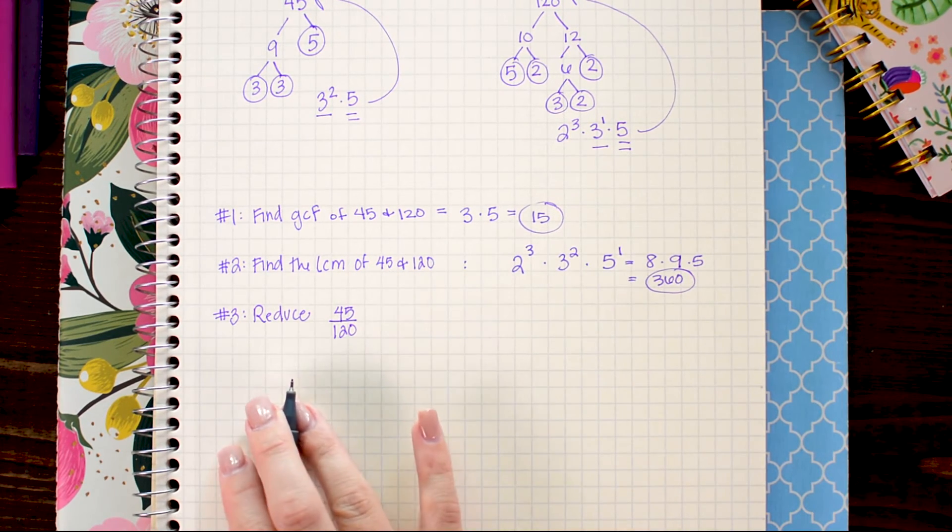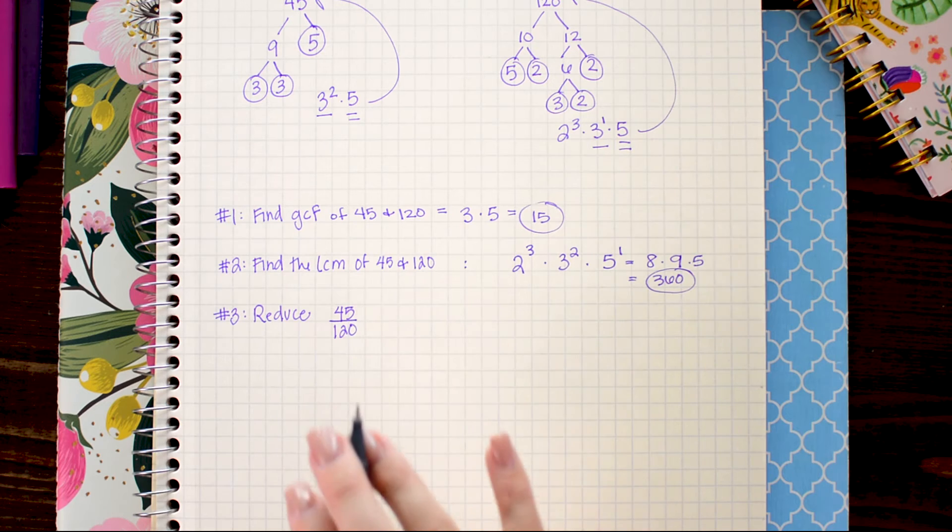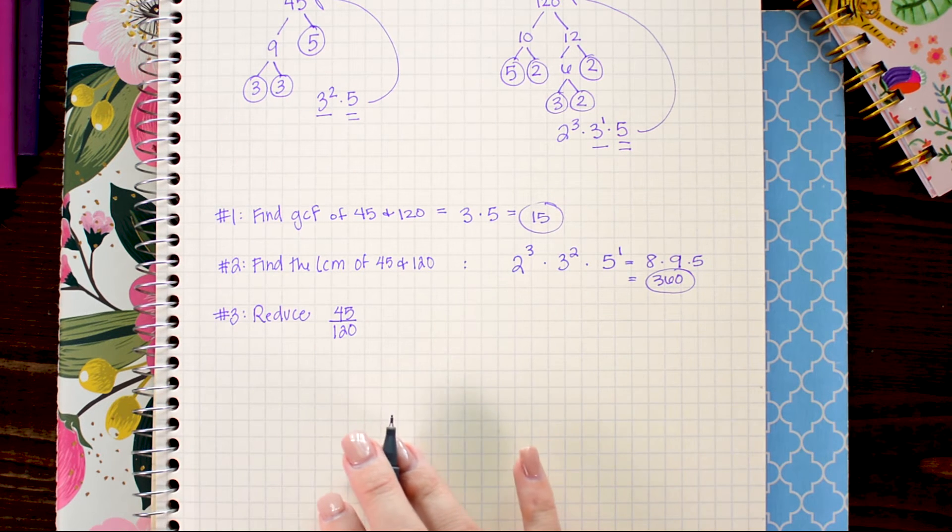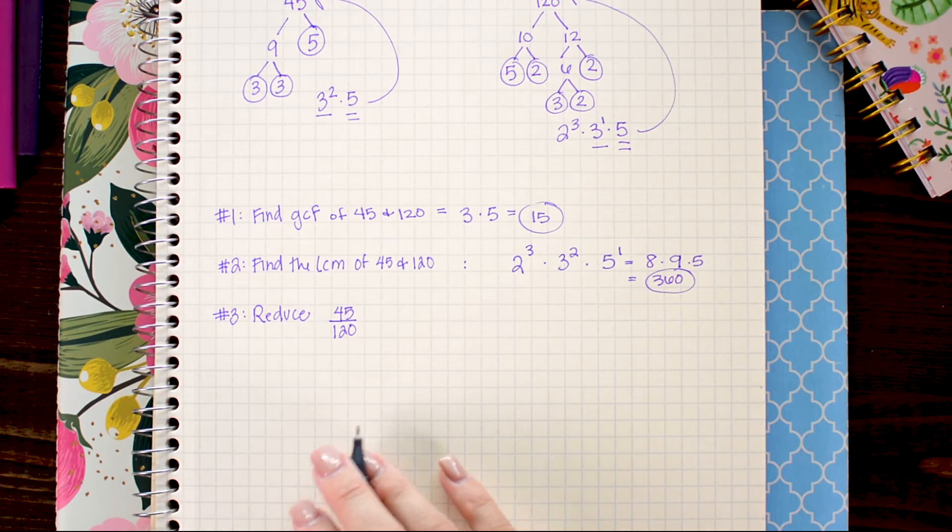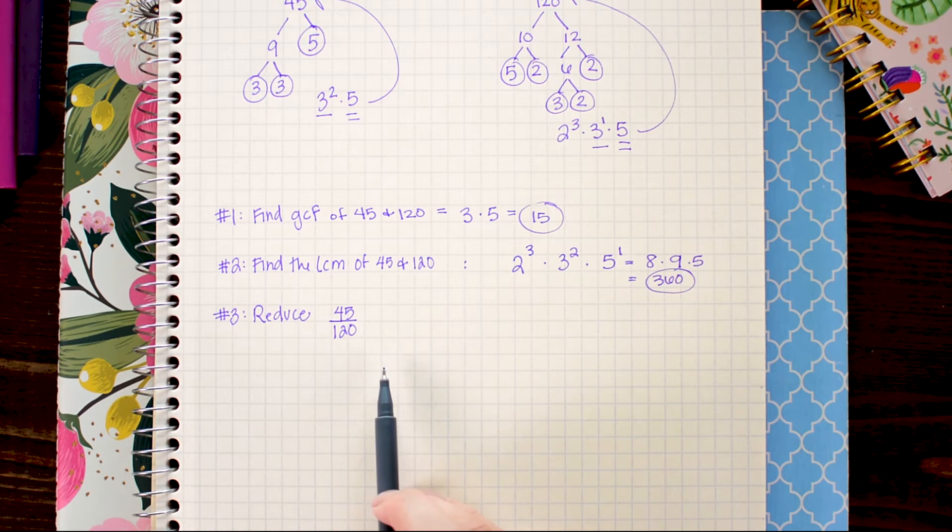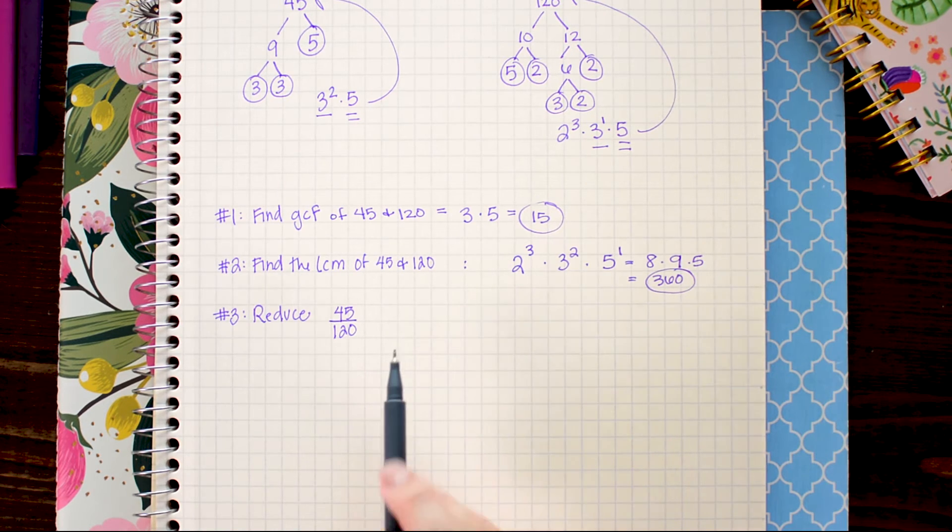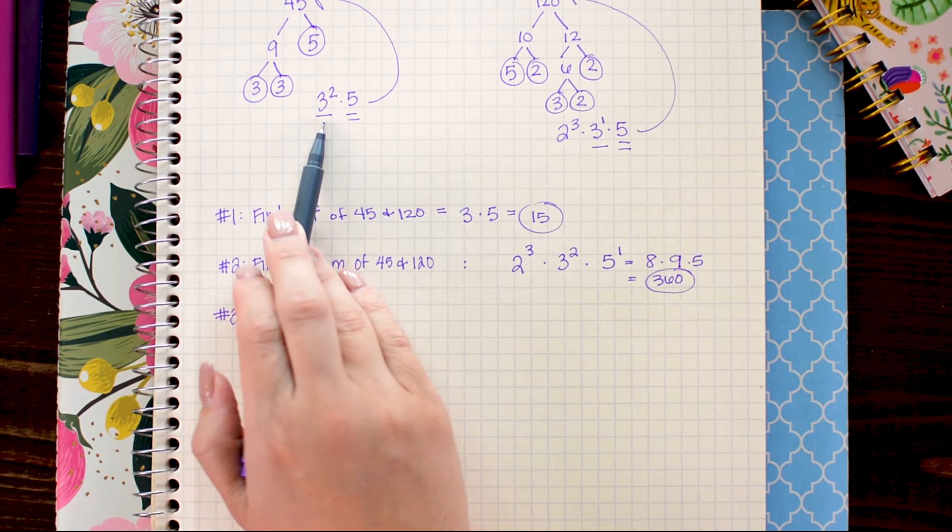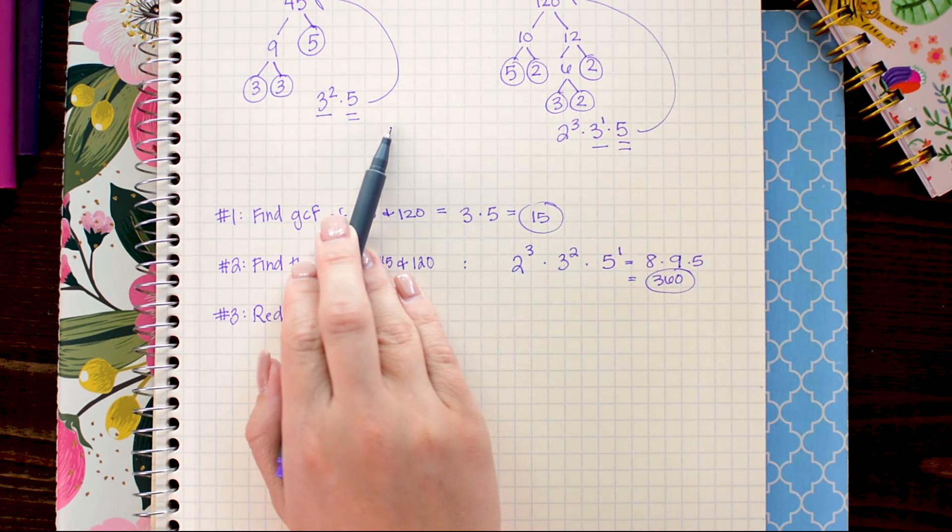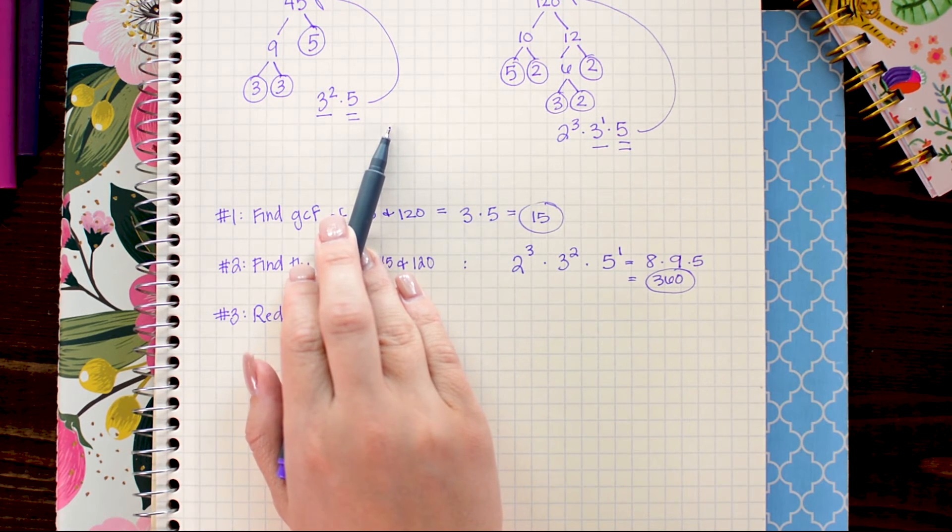Another thing you can do with these prime factorizations is you can use it as a handy tool for reducing. So say we had a fraction of 45 over 120. We could sub in the corresponding prime factorizations and then go ahead and just cross cancel.